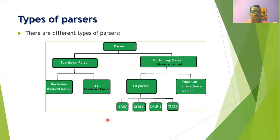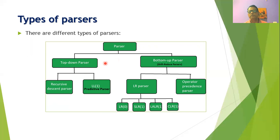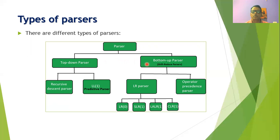There are two different types of parsers. Basically a parser is classified into two categories. The first is called the top-down parser, where we start from the top and come down. The other is called the bottom-up parser, where we start from the bottom and go to the top. The bottom-up parser is also called a shift reduce parser.